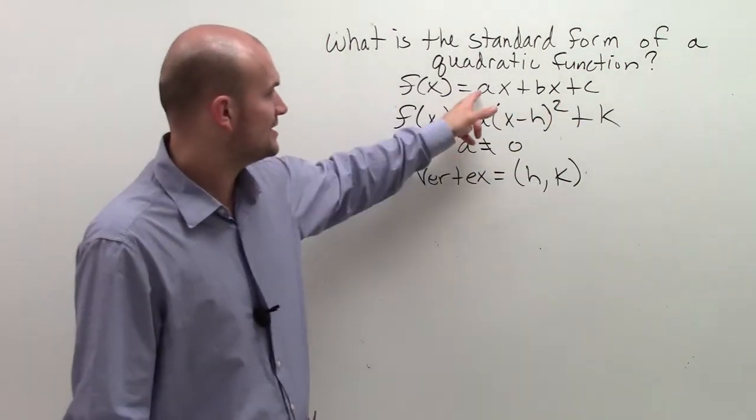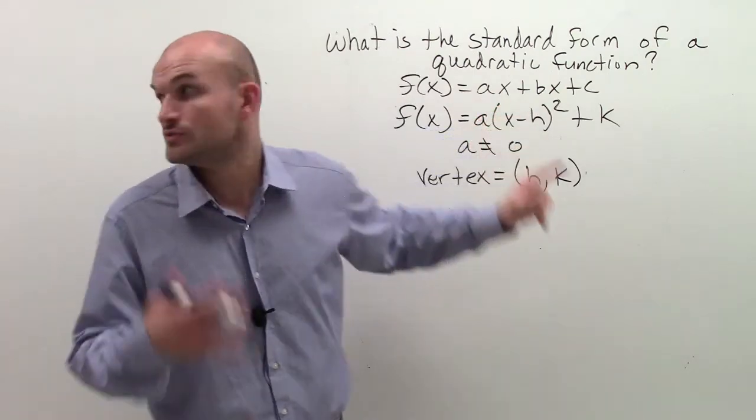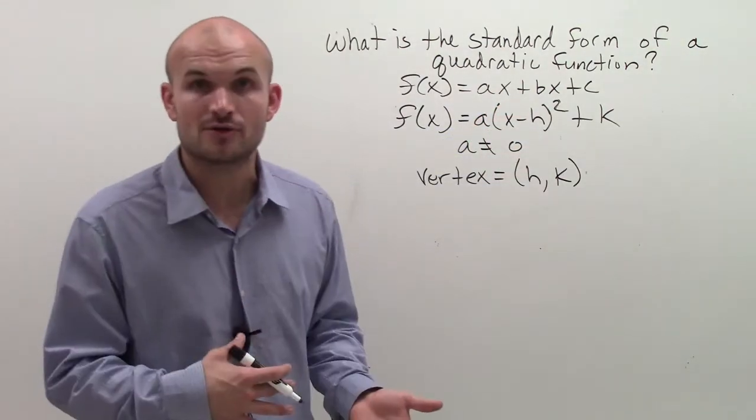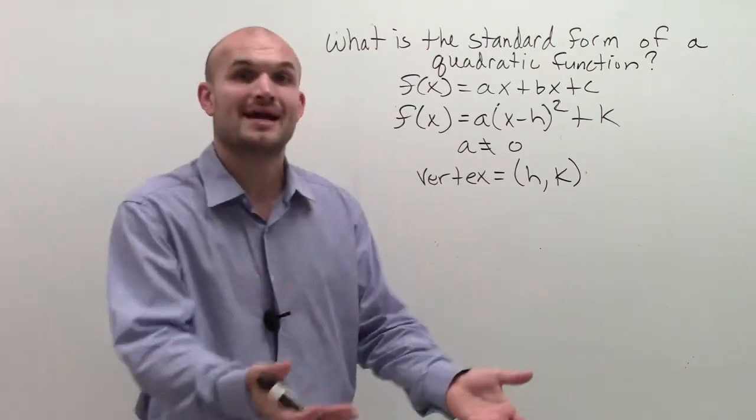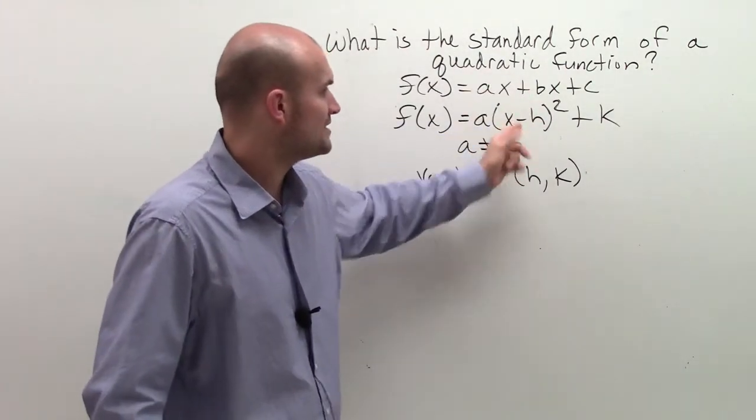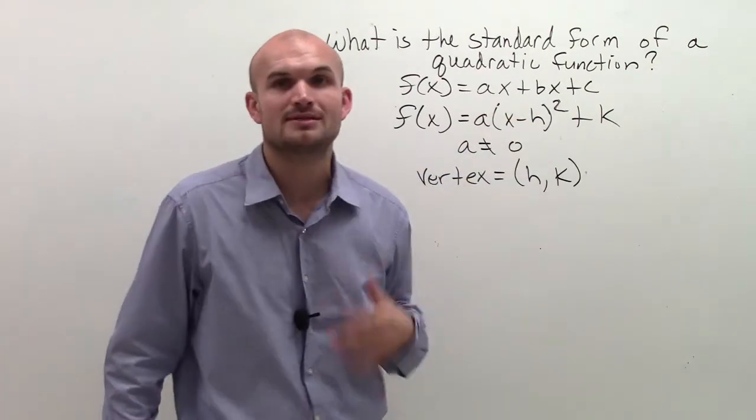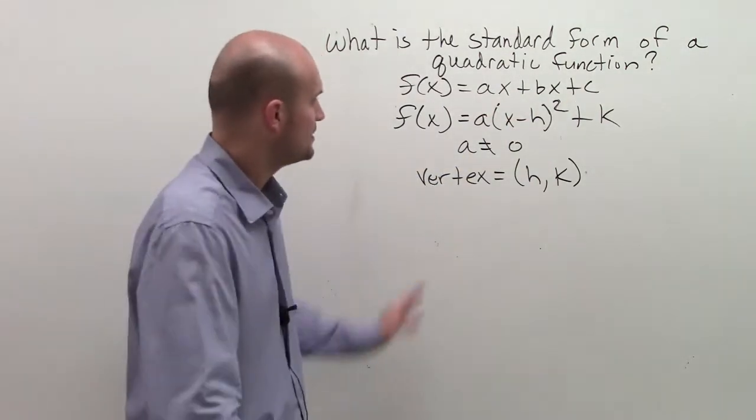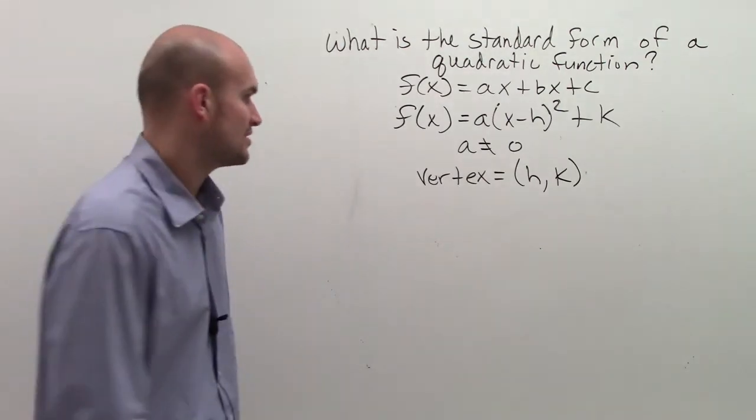So the vertex, see here, we don't have to use the formula opposite of b over 2a and then plug that back into the formula. For here, all we simply can do is when we have it in this formula, we can just determine what h and k are, and then we're all good. So that's also what's helpful with the standard form.